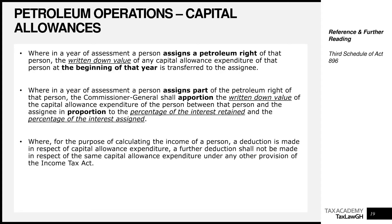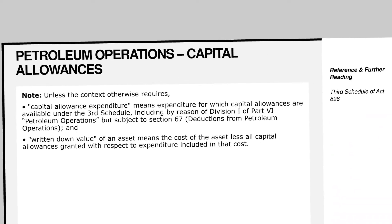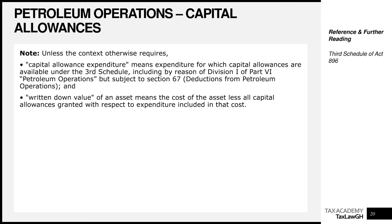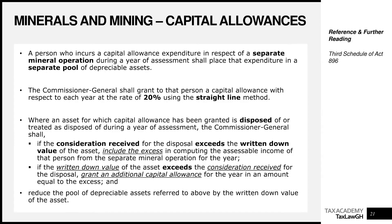Let's move to mining operations. Before we get there, let's define a few things: capital allowance expenditure means expenditure for which capital allowances are available under the Third Schedule of the Income Tax Act, Act 896, which is what I've been referring to all along. Written-down value of an asset means the cost less all capital allowance expenditure granted to the person with respect to that asset.